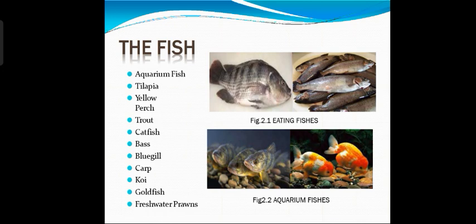The types of fish obtained from these farms include aquarium fish and eating fish. The names of common eating fish are tilapia, yellow perch, trout, catfish, etc.